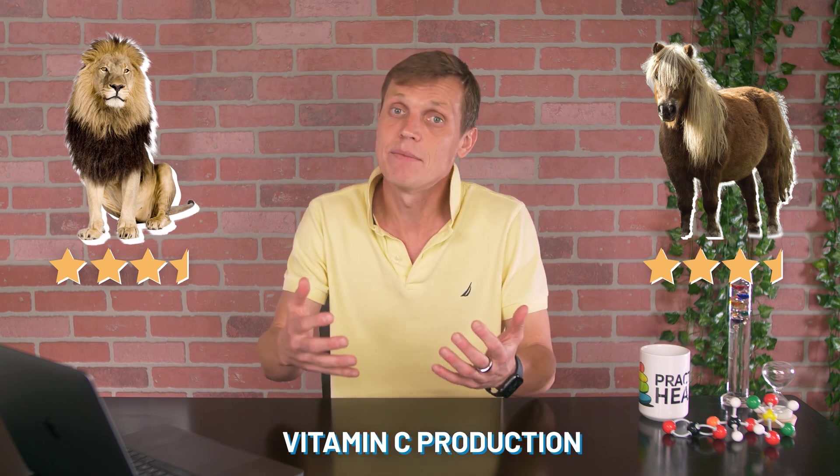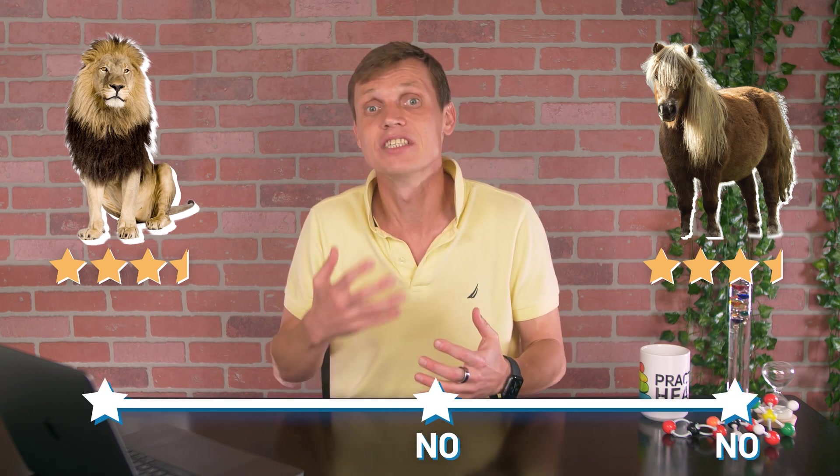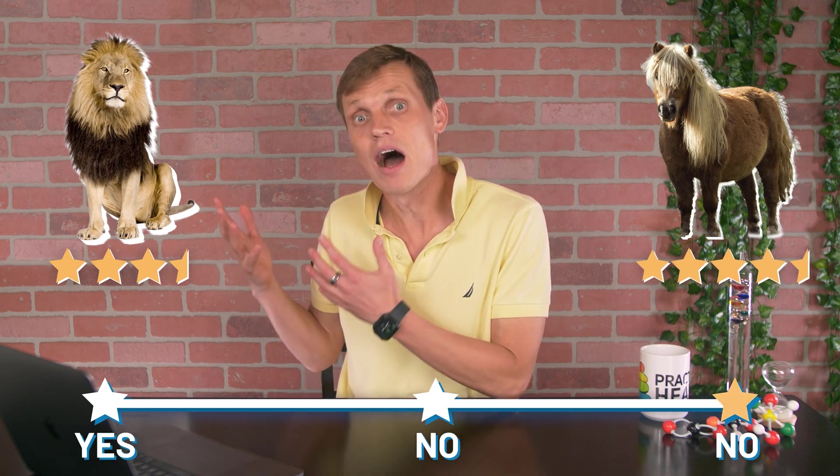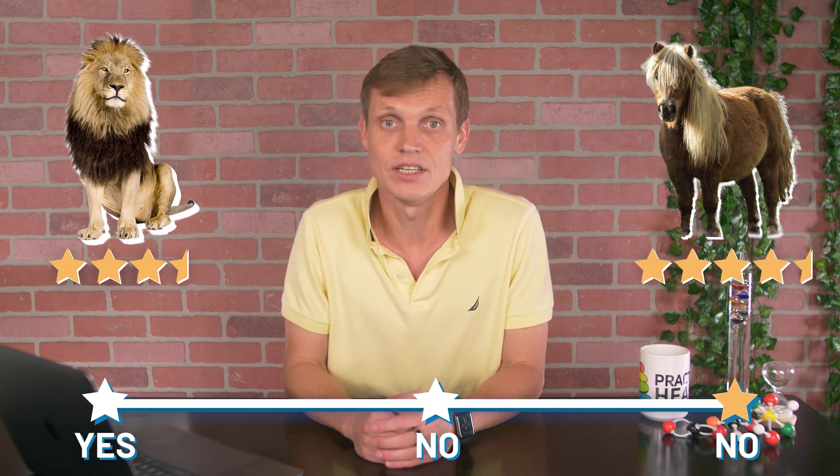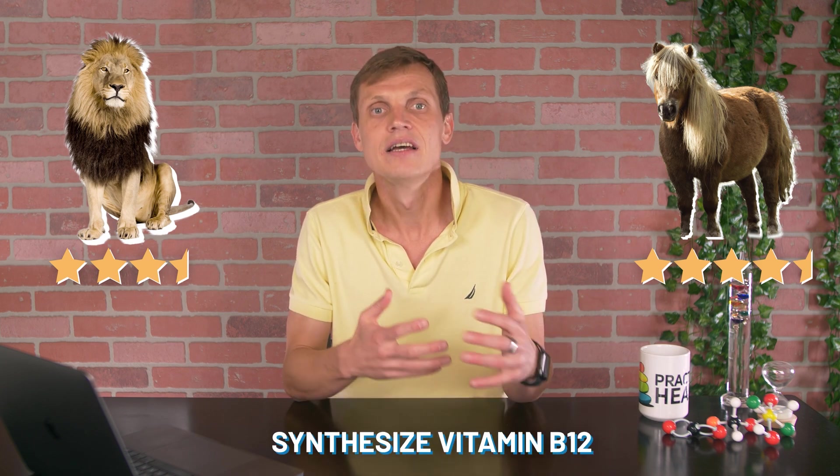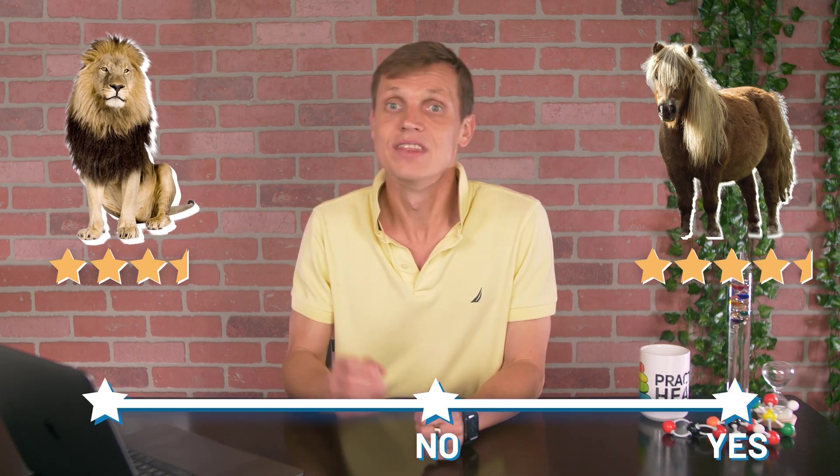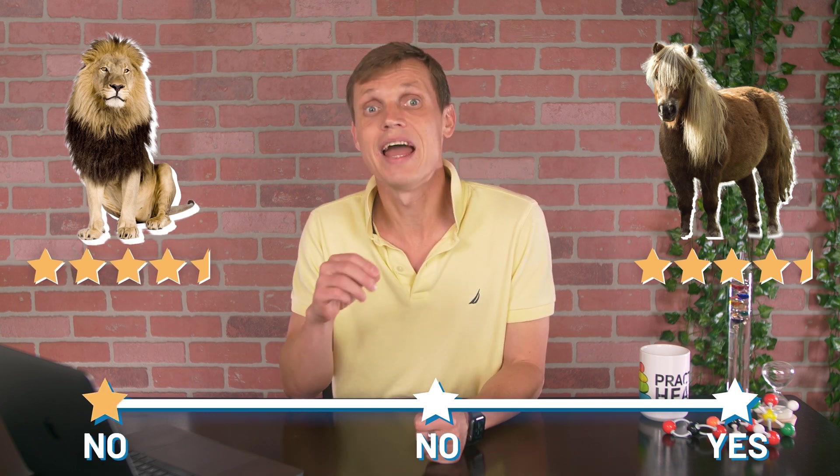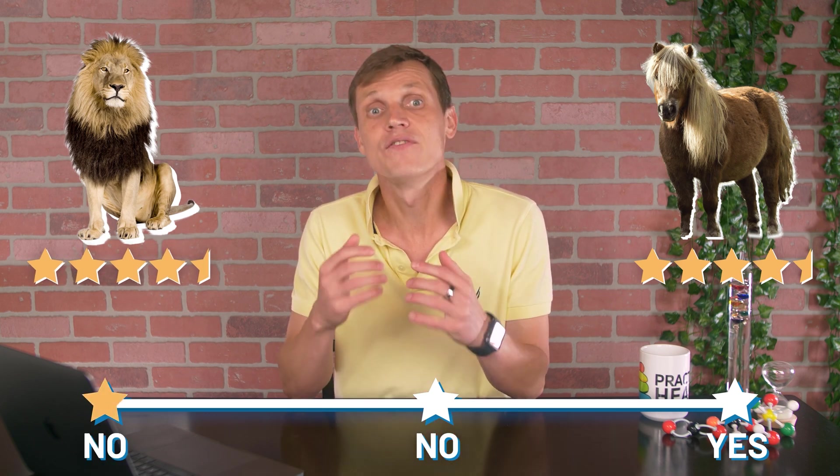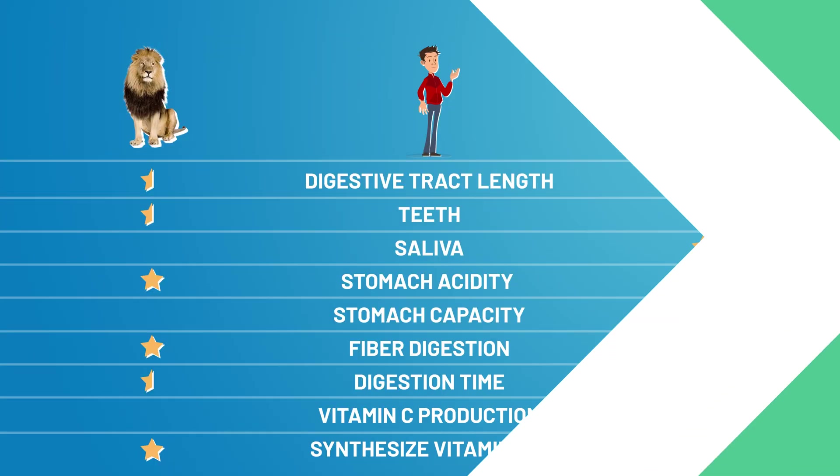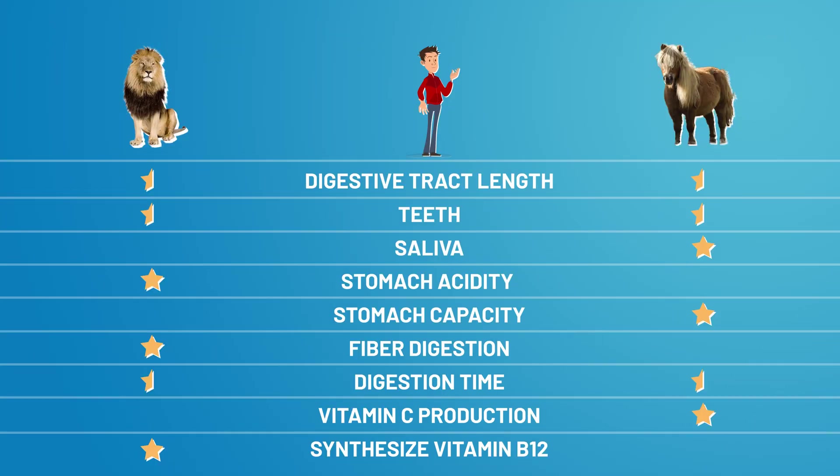As you can see, there are good arguments on both sides. And we can continue this list. For example, humans cannot produce vitamin C on their own. We can only derive it from plant sources. Carnivores and some omnivores produce their own vitamin C. On the other side, humans cannot synthesize their own vitamin B12. That's why vitamin B12 is usually sourced from animal foods such as liver, fish, chicken and eggs. So, there's no consensus here and this topic remains a highly debated one even today.